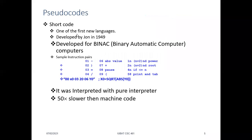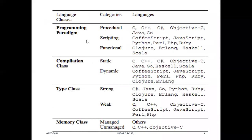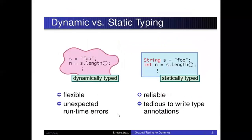We also saw the first programming languages — Short Code, Speed Code — and then we looked at the different language classes and how we categorize programming languages into different categories. Then we compared dynamic and static typing.